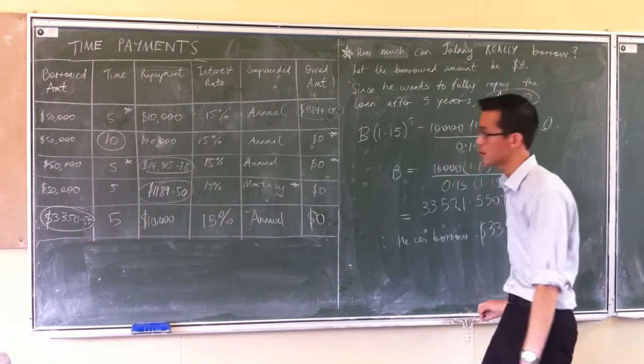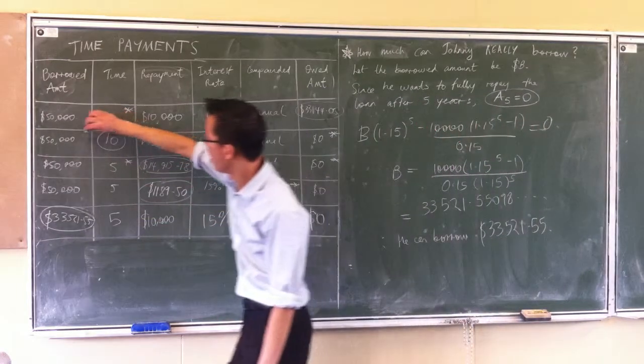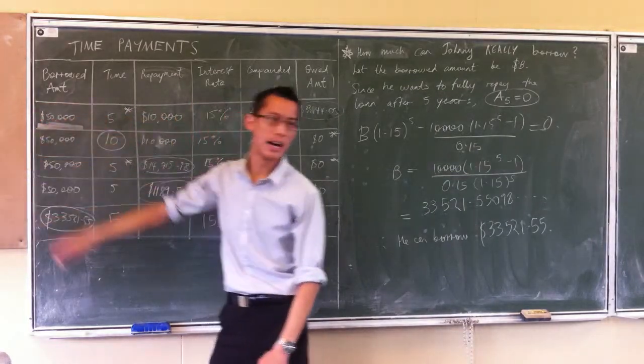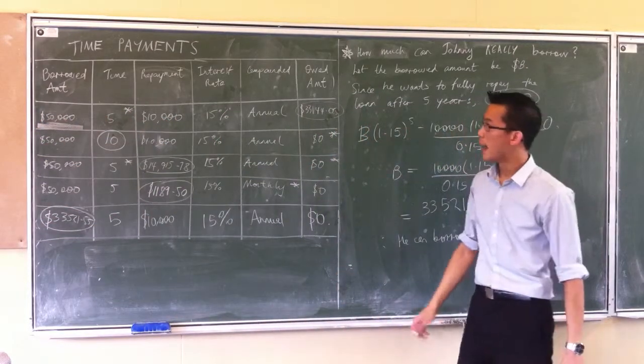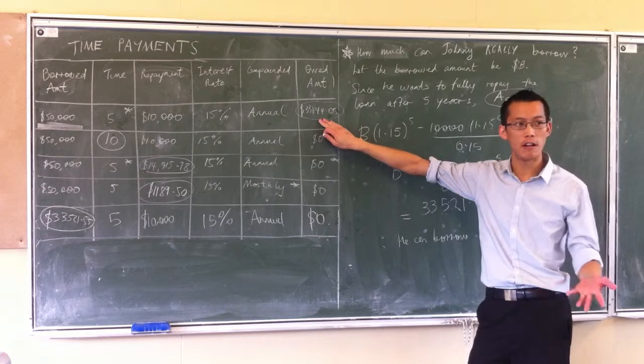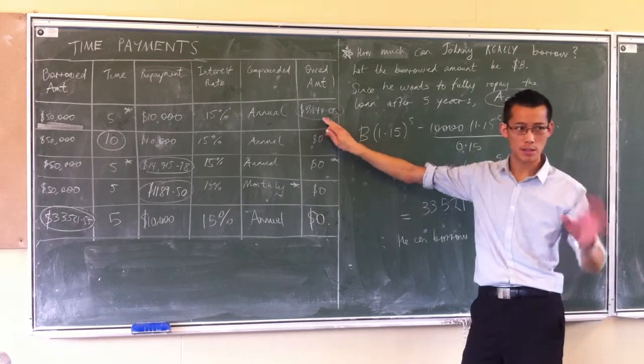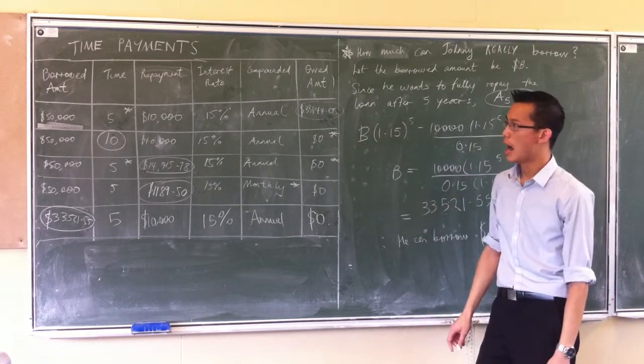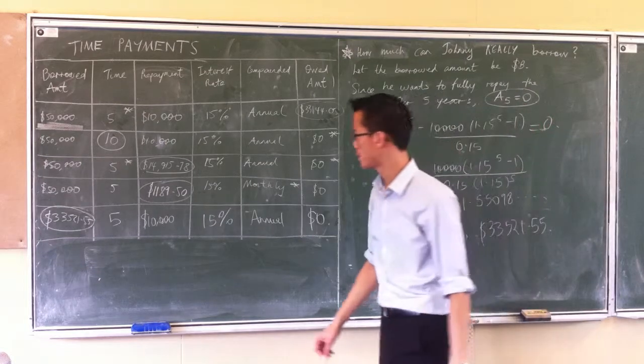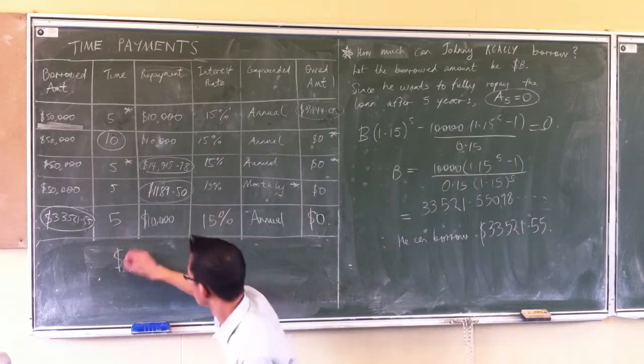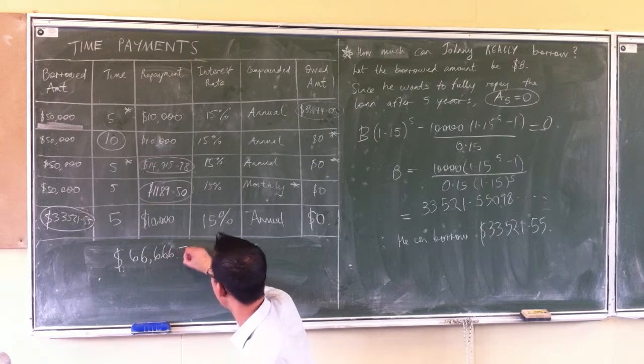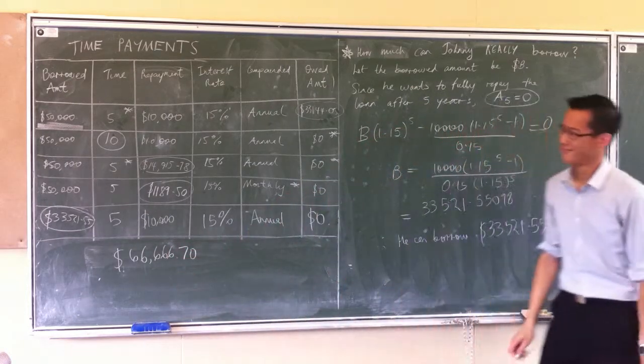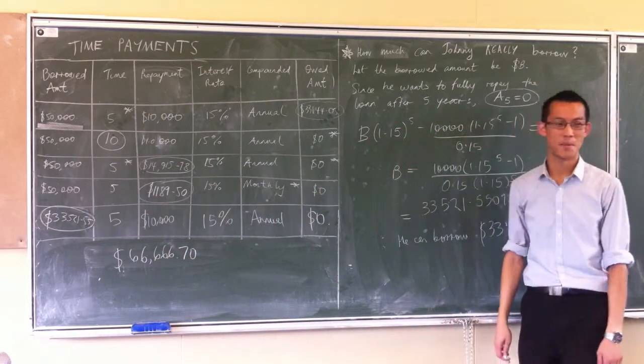The difference you probably noticed is just how much he borrowed, right? Just by virtue of borrowing a larger amount at the beginning, that's what makes him pay off so little. And actually this should make sense to us. Think about this. I'll pose this question to you: if he borrowed $66,666.70, it's just a coincidence that that's the number.